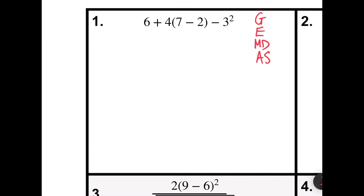Problem number one says 6 plus 4 times 7 minus 2 minus 3 squared. We're going to start out with grouping symbols. I have 7 minus 2 in parentheses. That will give me 5. So now we have 6 plus 4 times 5 minus 3 squared.